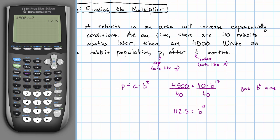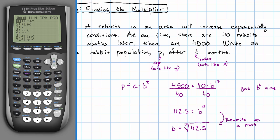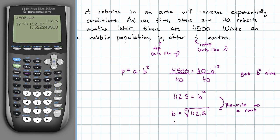That's the job for the root, right? If B to the 17th power is 112.5, B must be the 17th root of 112.5. That is, the 17th root of 112.5. We get B is about 1.32.